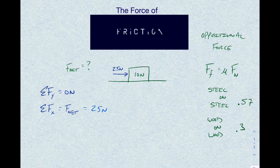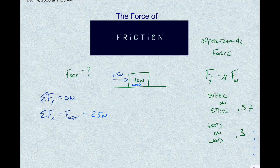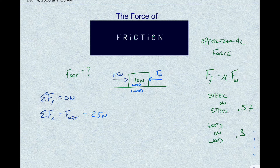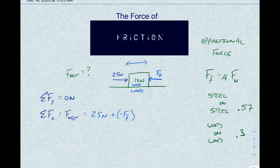But now we have friction. Say this is a 10-newton wooden block resting on a wooden surface. There must be an oppositional force — the force of friction opposing the direction of motion, trying to slow it down. So now I have another force in the x-direction: a negative force of friction, since friction points left (negative) while the 25-newton force points right (positive).